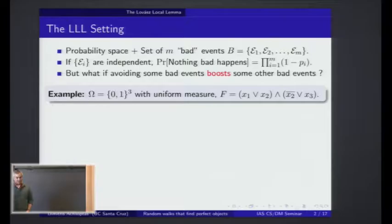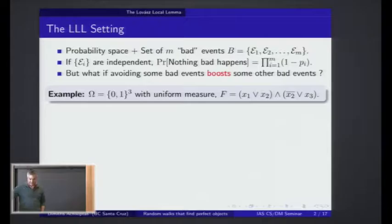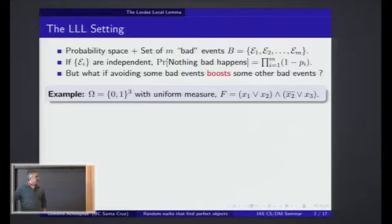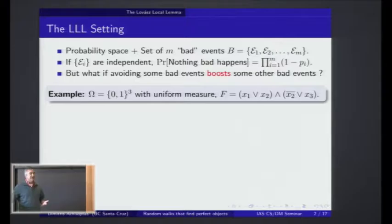Let me start by reminding you what is the Lovász Local Lemma setting. We have some probability space in which we have defined some subset of events — some subsets designated as bad events. We would like to find an elementary event in the probability space such that none of the bad events occurs. Clearly if the events are independent, then the probability that no bad event occurs is equal to the product of the probability of the complement, and the probability that none of them happens is strictly positive. But the question becomes interesting when you're in a situation in which avoiding one bad event makes other bad events more likely.